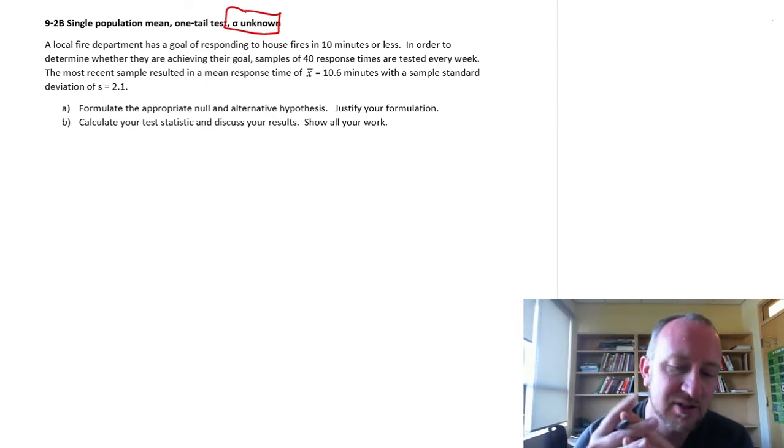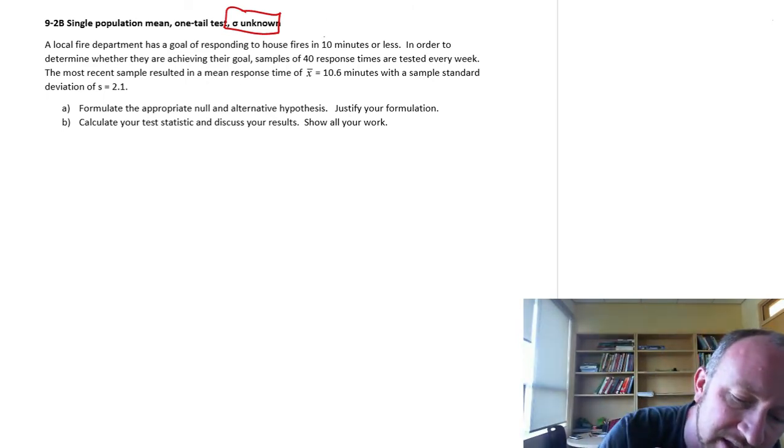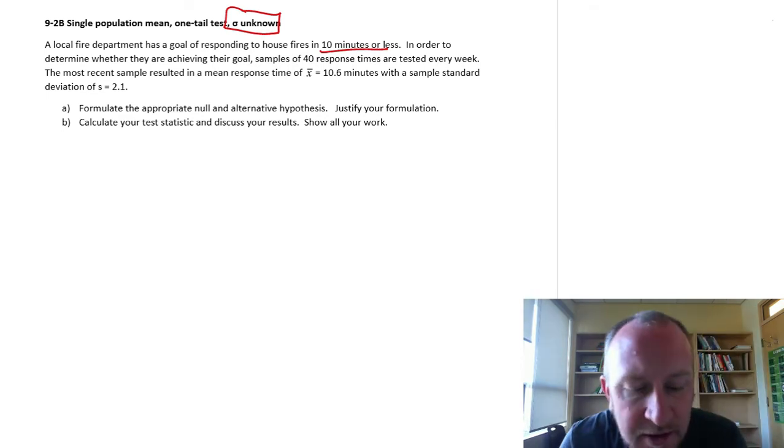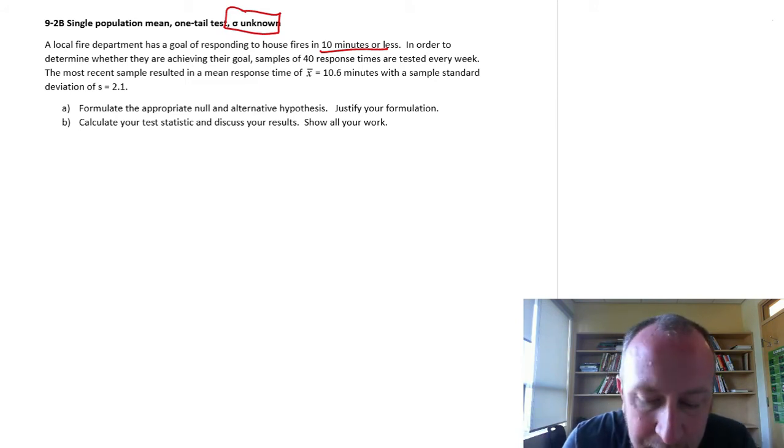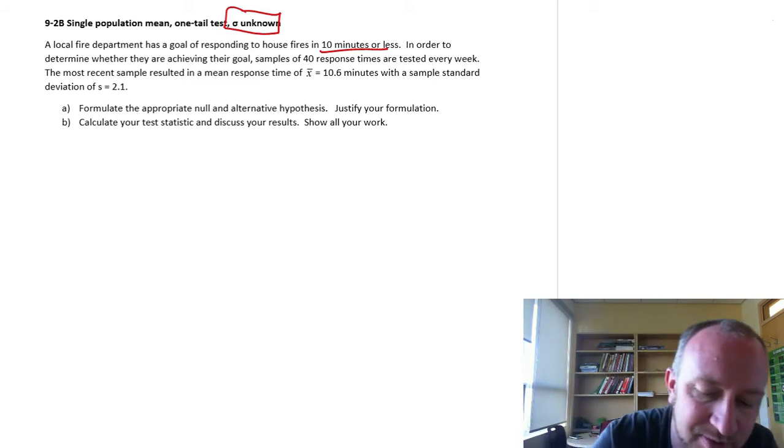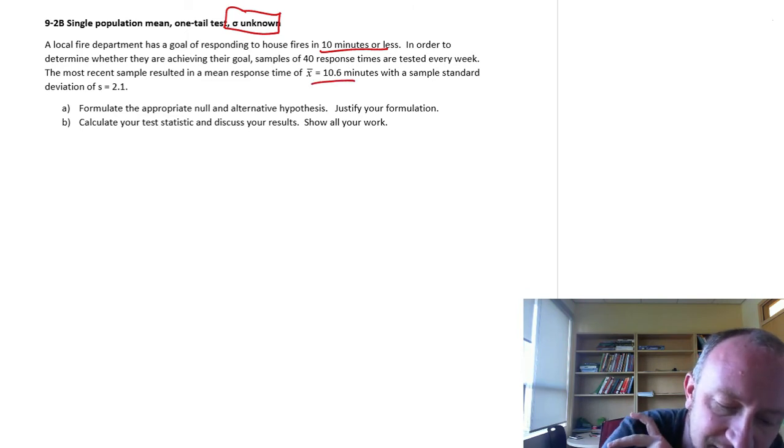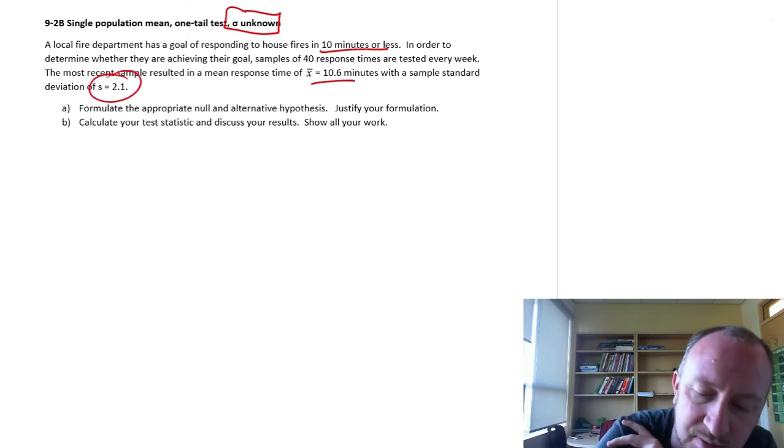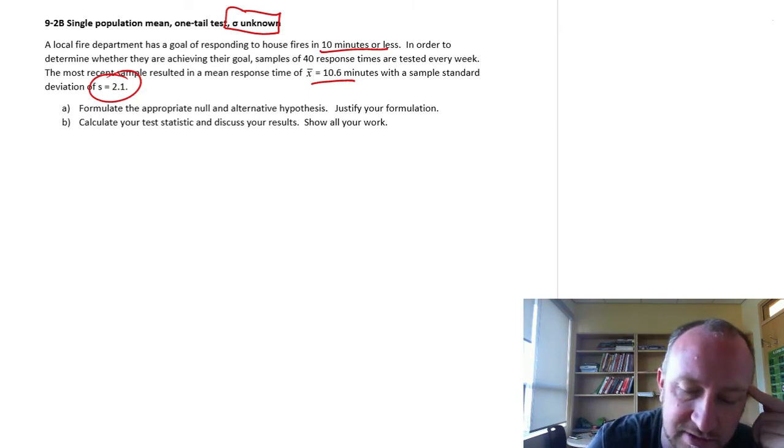A local fire department has a goal of responding to house fires in 10 minutes or less. In order to determine whether or not they're achieving their goal, we take a sample of 40 response times to test. The most recent sample provided a mean of 10.6 and a standard deviation of 2.1. Formulate the test and okay, let's just go through everything.